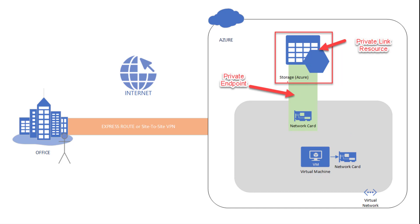Now, how many private endpoints can you create? The number of private endpoints you can create for one virtual network is 1,000. Similarly, for each private link resource, you can have 1,000 private endpoints. For more details and up-to-date information, I'll provide the link for the Azure service limits in the description below, where you can verify the current limits from both the private link resource perspective and the virtual network perspective.